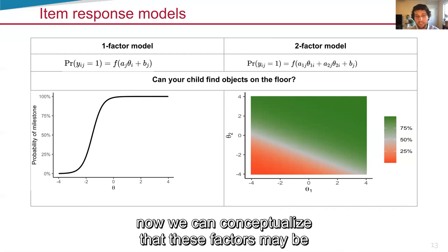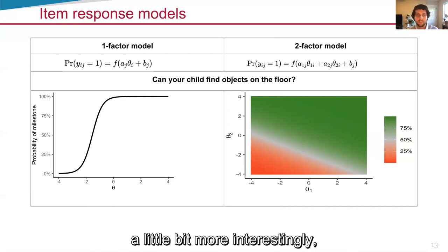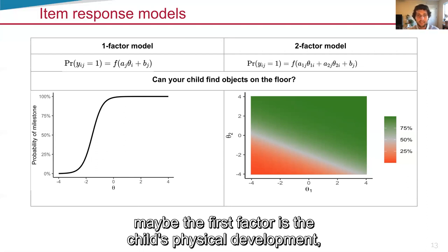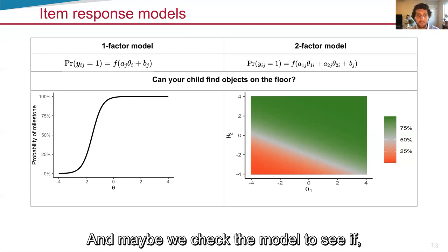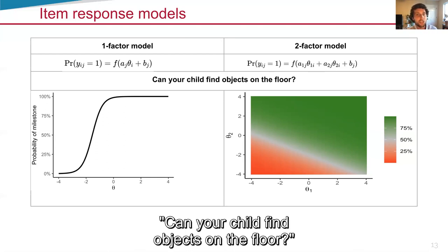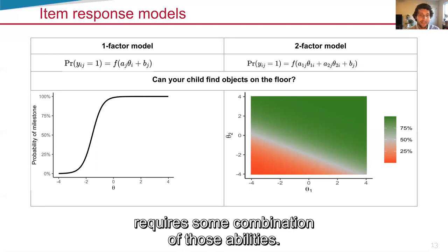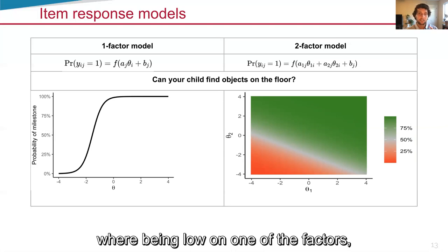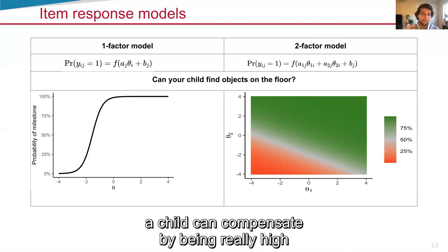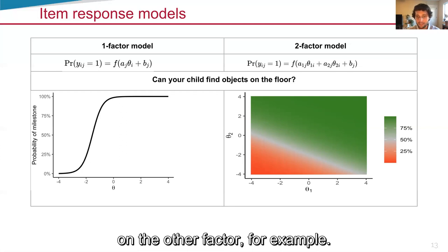Now we can conceptualize these factors. Maybe the first factor is the child's physical development, and maybe the second factor is the child's cognitive development. We're using a compensatory model here, which we found fit better than alternatives, where being low on one of the factors, a child can compensate by being really high on the other factor, for example.